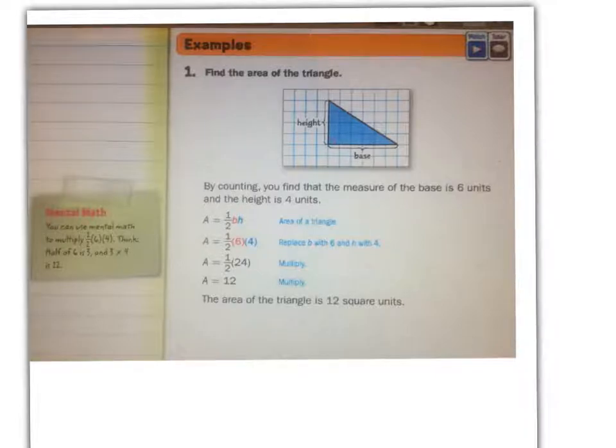Let's do an example together of finding the area of the triangle. By counting, you find that the measure of the base is six units. That's one, two, three, four, five, six. And the height is four. One, two, three, four. So then we plug it into our formula. Area equals one half times the base times the height. Plug in the six and the four for the base and the height. Multiply six times four, which is 24. Then take one half of 24, which is 12.